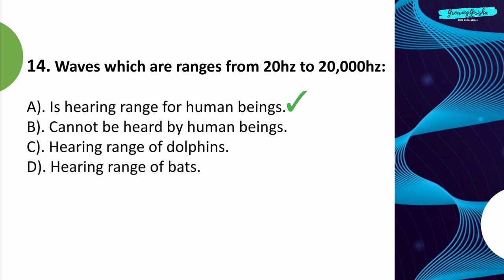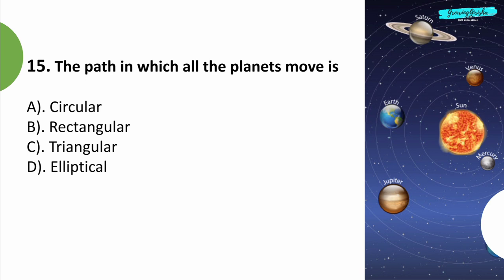Question 15: The path in which all the planets move is? Option D: Elliptical.